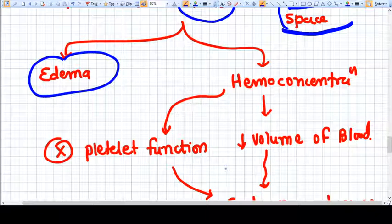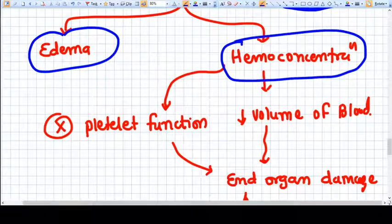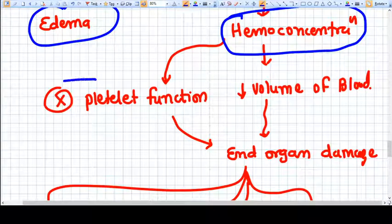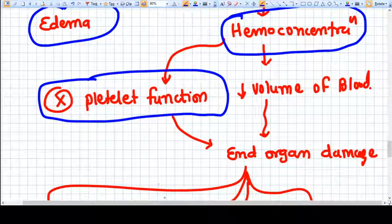Because the plasma goes outside the capillaries and the circulating system, there will be hemoconcentration. So because of hemoconcentration, the platelet function cannot be easily performed, so the platelets will break up and thrombocytopenia will be there.